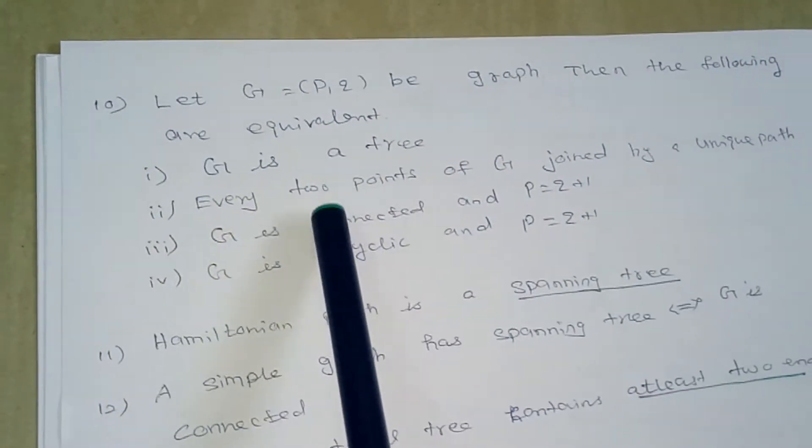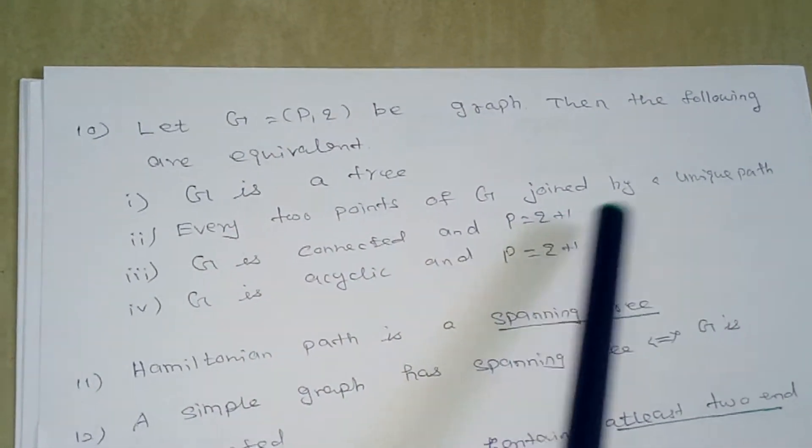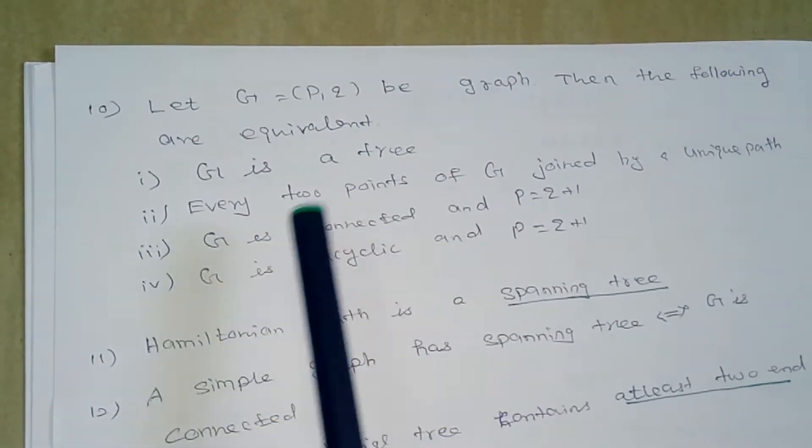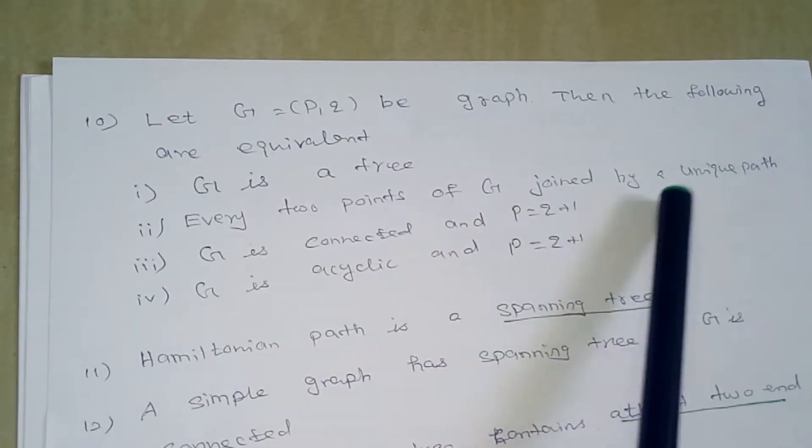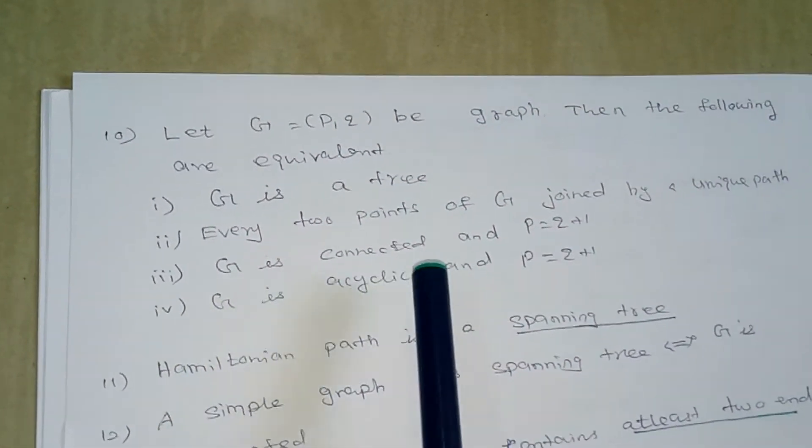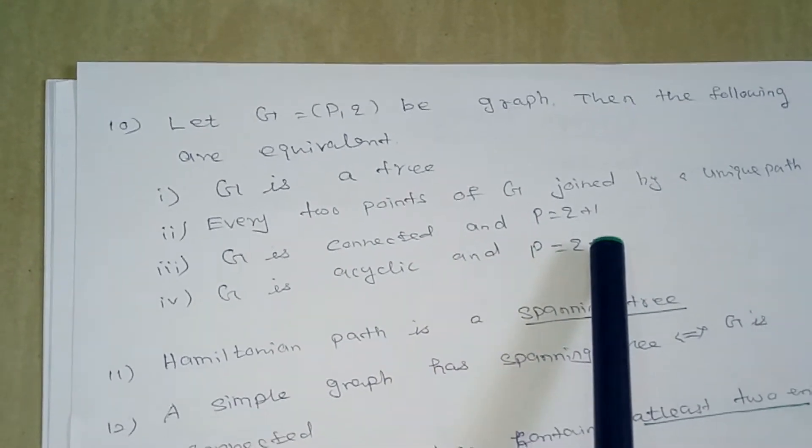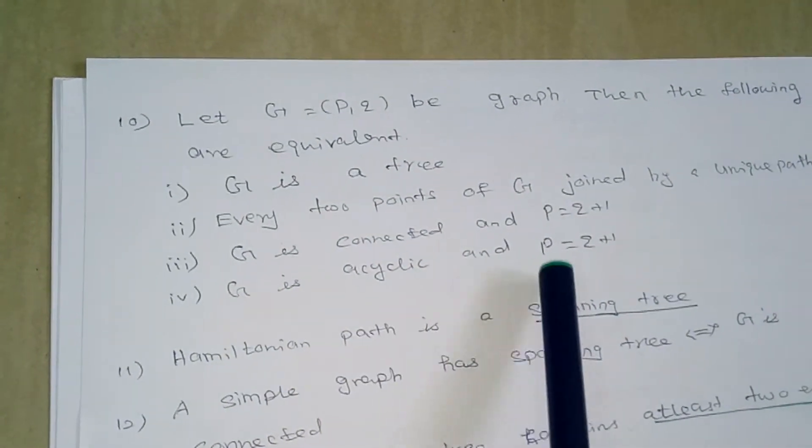Next, let G equal to (p, q) be a graph. Then the following are equivalent: G is a tree. Every two points of G are joined by a unique path. G is connected and p equals q plus 1. G is acyclic and p equals q plus 1.